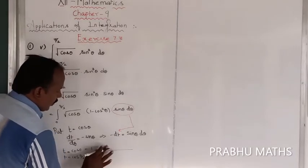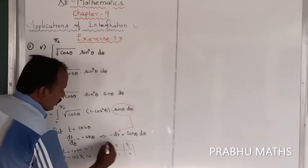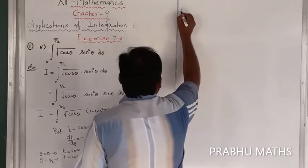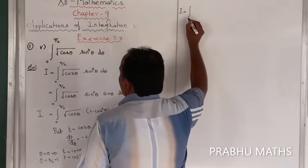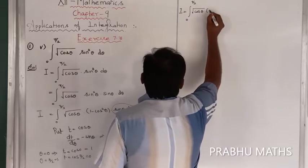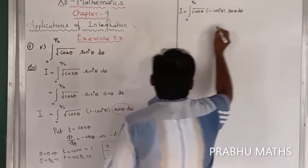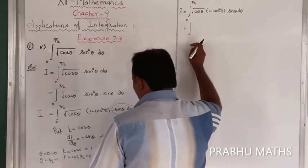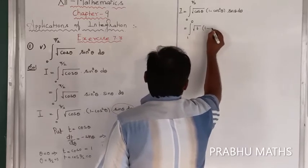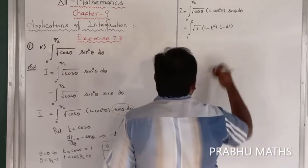So the limits change: θ goes from 0 to π/2, and correspondingly t goes from 1 to 0. Applying the substitution values, I becomes the integral from 1 to 0 of √(cosθ) · (1 - cos²θ) · sinθ dθ. Substituting cosθ = t and sinθ dθ = -dt, we get minus the integral from 1 to 0 of √t · (1 - t²) · dt.